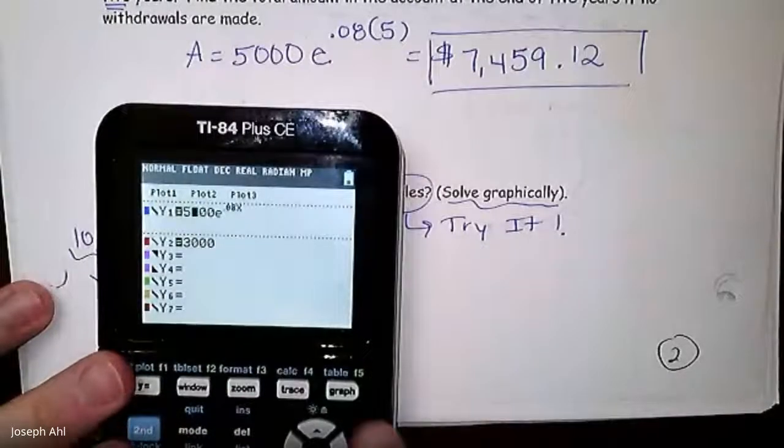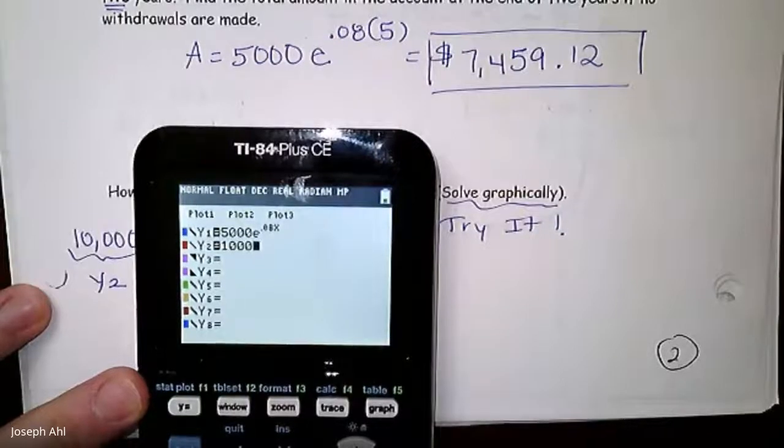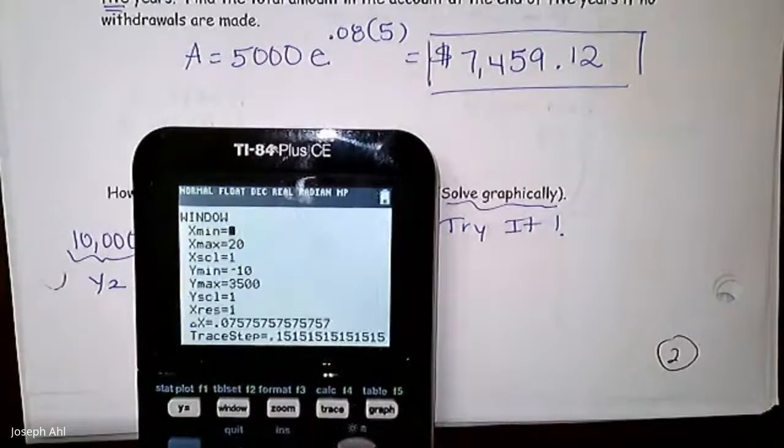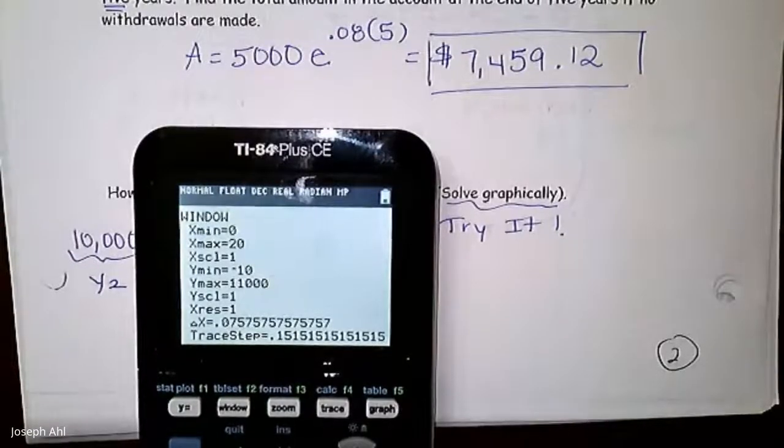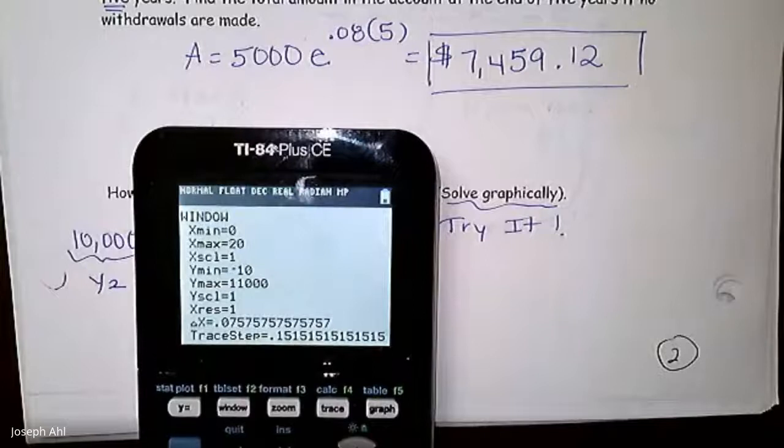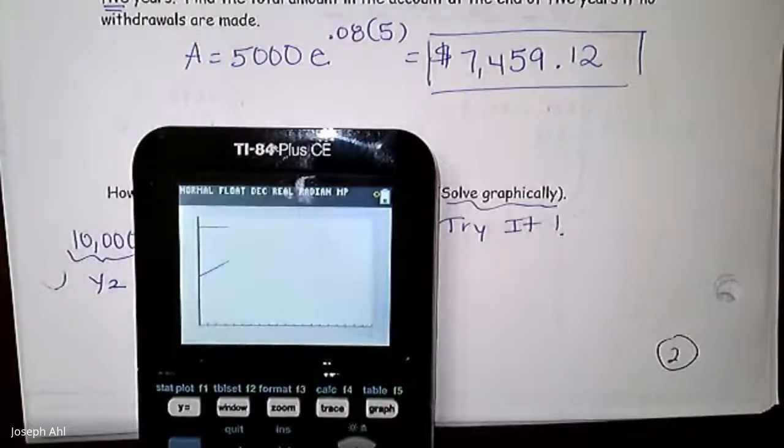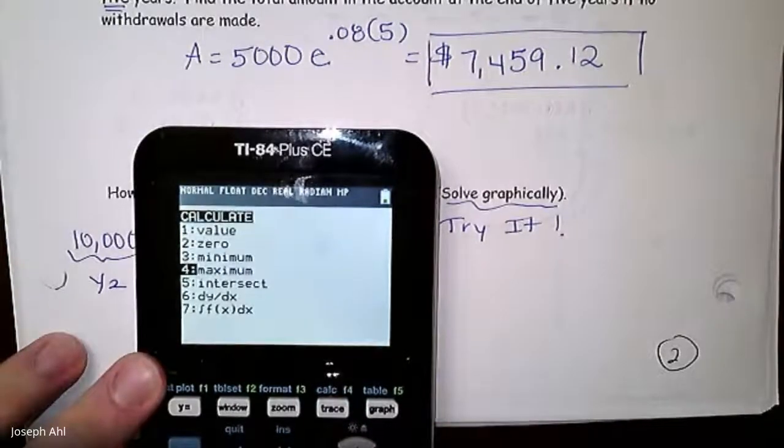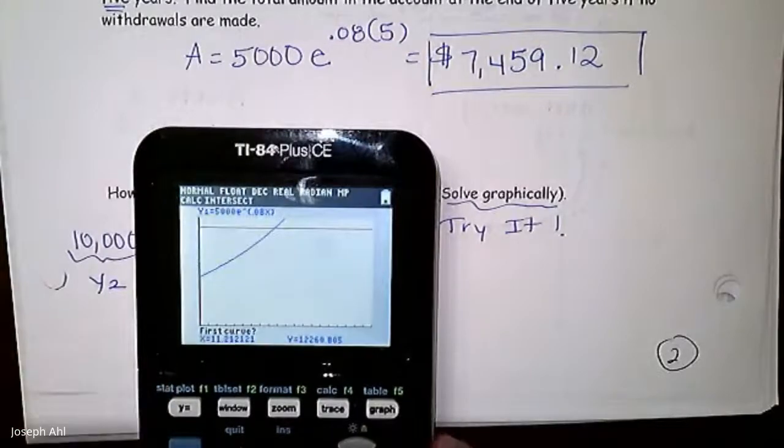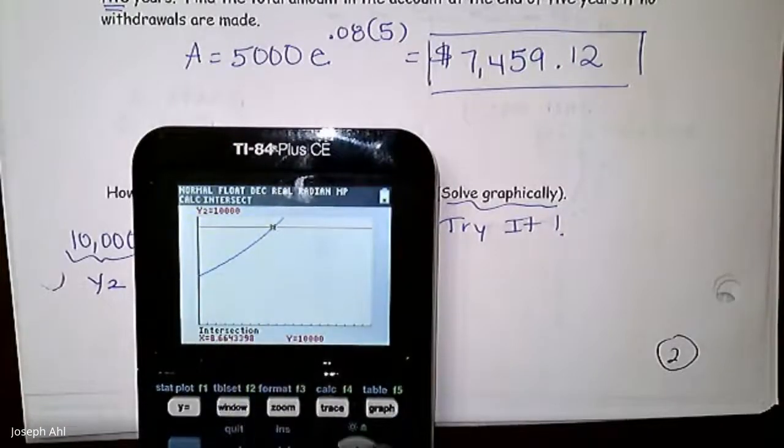So in Y equals, I need 5,000. Actually, everything else is the same, e^(0.08x). So that was a quick fix. In Y2, I'm going to type in the double value, 10,000. I know already I'm going to have to adjust the Ymax to be more than 10,000. I'll go up to 11,000. Xmax of 20. I think I'm pretty confident it will happen before 20 years is up. In five years, we're at this amount. So by 20 years, will we be at 10,000? That seems pretty likely. If I hit graph, yeah, it's definitely going to happen before 20 years is up. So once that's done graphing, I'll calculate the intersection. So we've got second trace, option five. Hit enter three times. And it takes 8.66 years for this to happen. So according to the intersection, time is 8.66 years.